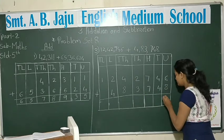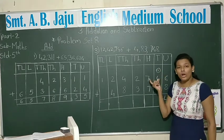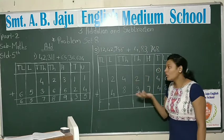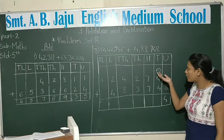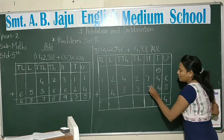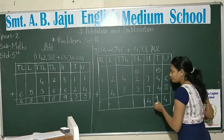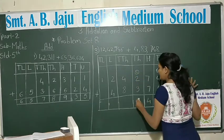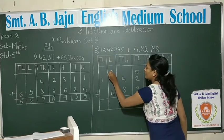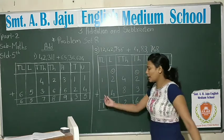So let's start with the numbers. 6 plus 8 is 14, write 4, carry 1. If you practice this, you can do the carrying in your mind. 4 plus 1 is 5, 8 plus 1 is 9. 7 plus 3 is 10, write 0, carry 1. 2 plus 1 is 3, 3 plus 3 is 6. 4 plus 8 is 12, write 2, carry 1. 2 plus 1 is 3, 4 plus 3 is 7, and 1 more digit.